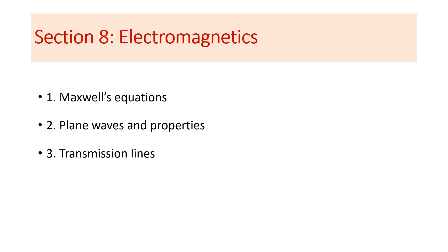The last section, section eight, is Electromagnetics — also one of the important sections in GATE 2024 for ECE. It includes three main concepts: Maxwell's Equations, Plane Waves and their Properties, and Transmission Lines. These are the three important concepts in Electromagnetics.